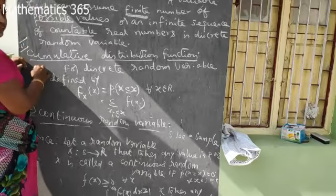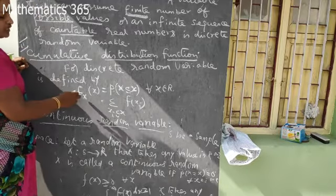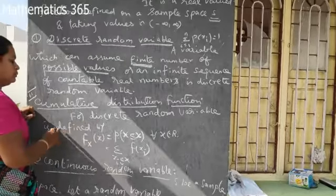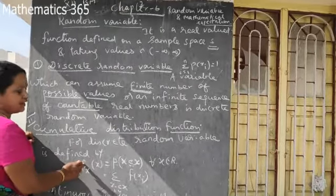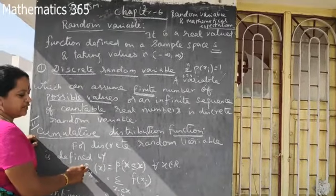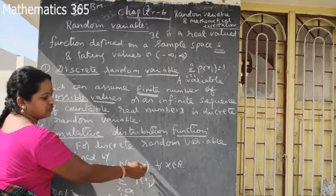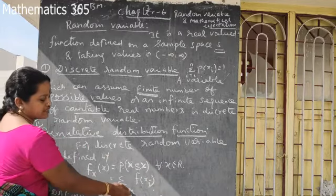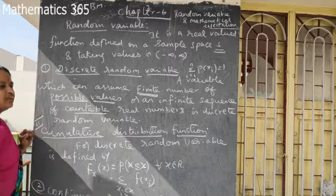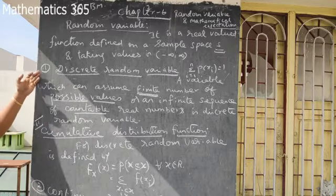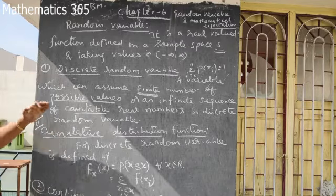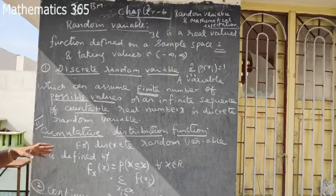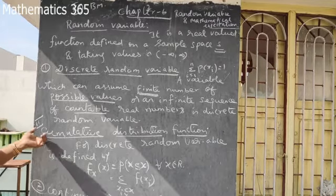For the discrete random variable, the cumulative distribution function is capital F of x, which equals the summation over x i less than or equal to x of f of x i. This is the important distinction between discrete and continuous random variables.